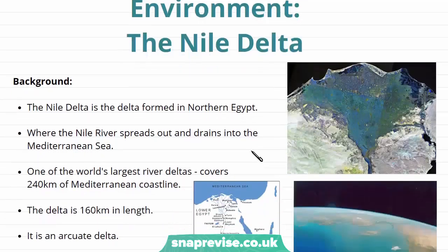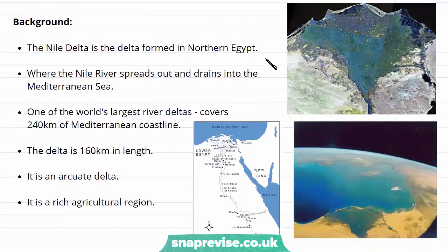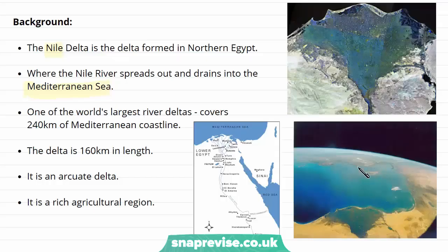The Nile Delta is a delta which was formed in northern Egypt. And as you can tell from the name, it's at the end of the Nile. The Nile Delta was formed where the Nile River spreads out and drains into the Mediterranean Sea. This is a satellite photo here showing the delta — this triangular shape — and the Mediterranean Sea. The Nile Delta stretches across around 240 kilometres of coastline, making it one of the world's largest river deltas.